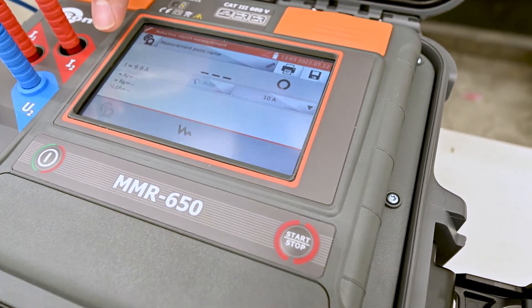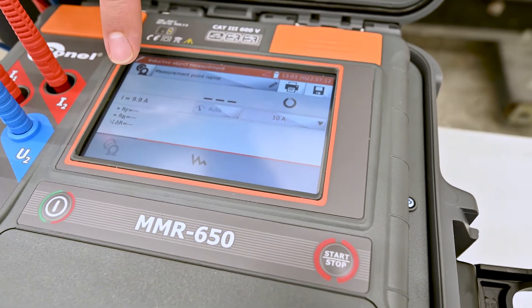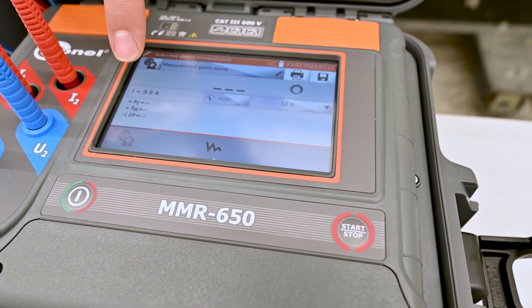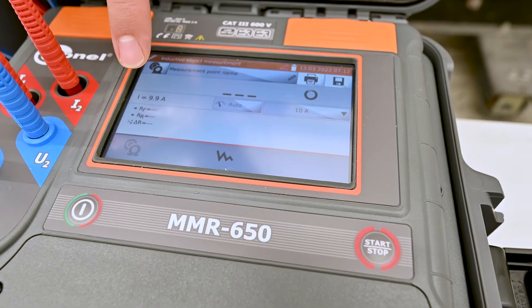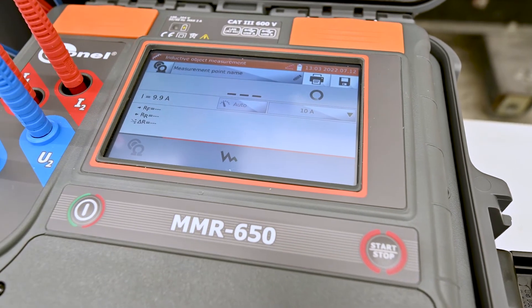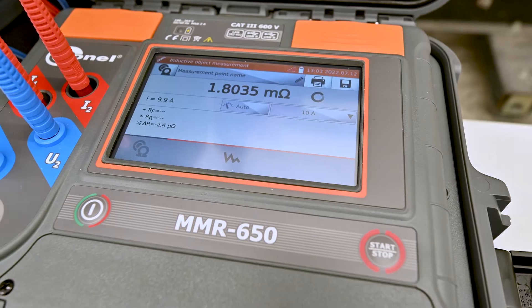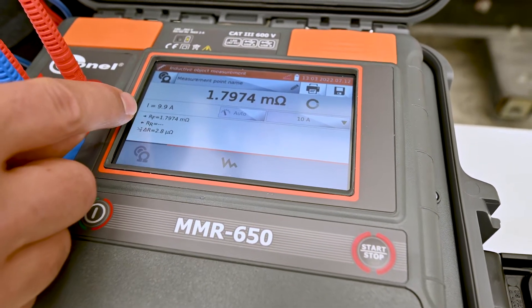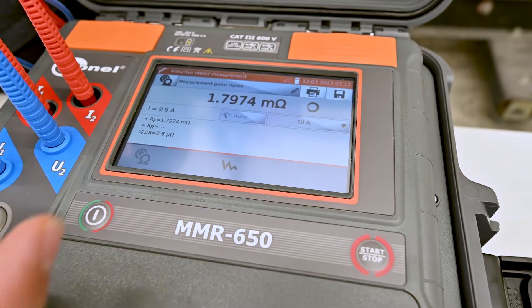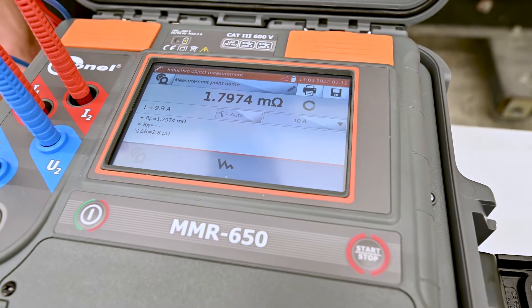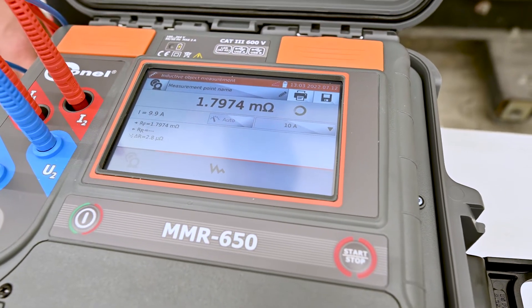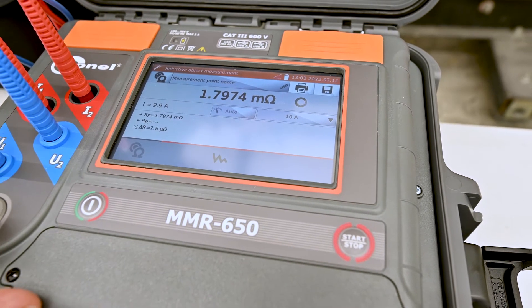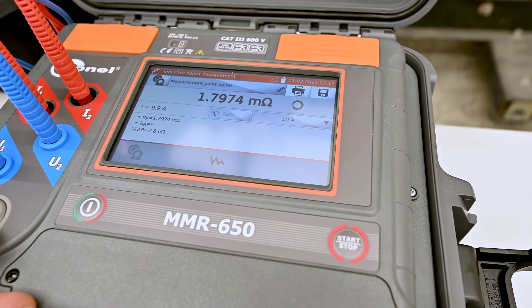You see the current will start to push, there it went, and we've got 1.7 milliohms. That's about what we expect for a low side winding. So let's repeat the measurement on the other two phases and compare them.